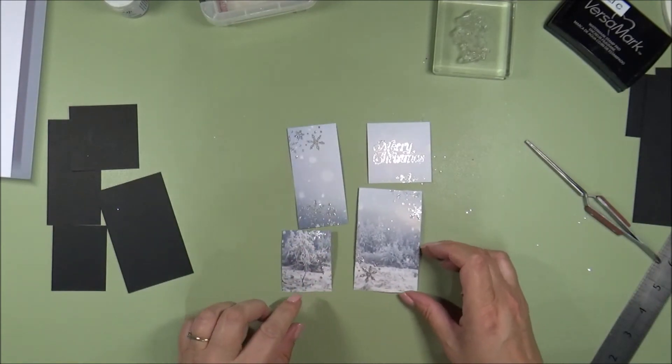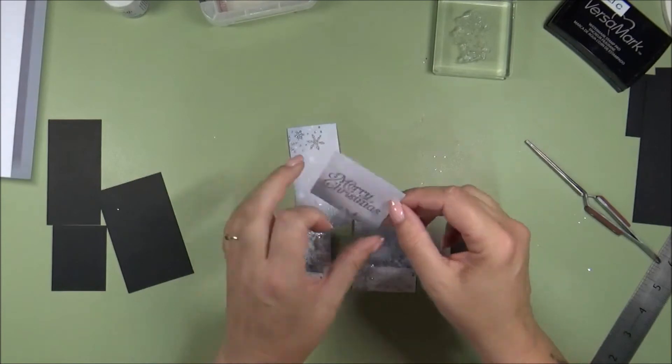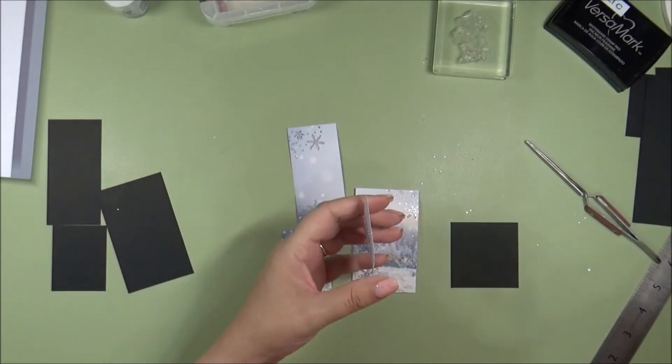All right. That's all my pieces heat embossed. And so now you just want to glue these onto your mats. So that's our pieces stuck to our mats there.